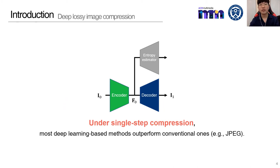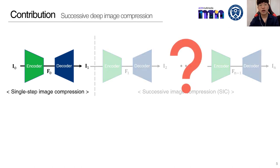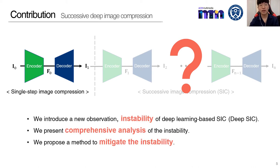Under single-step compression, most deep learning-based methods outperform conventional ones like JPEG. However, the problem is that all existing methods do not consider successive image compression. Our contributions are as follows: first, we introduce a new observation — instability of deep learning-based successive image compression; second, we present a comprehensive analysis of the instability; and lastly, we propose a method to mitigate the instability.